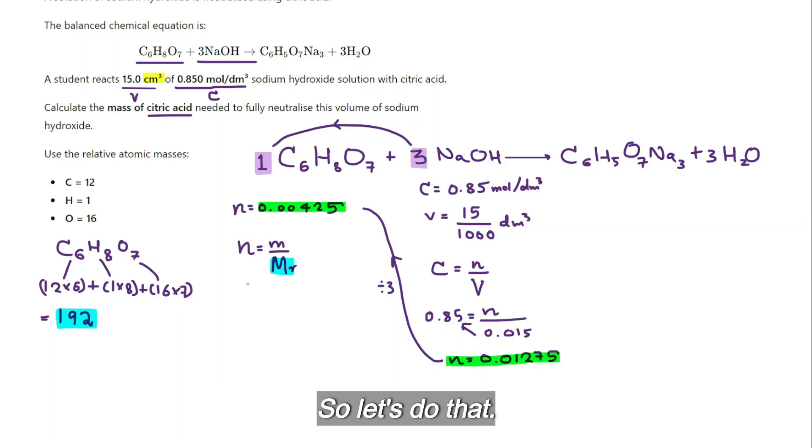So let's do that. Number of moles is 0.00425 equals mass divided by 192. Cross multiplication gives me the final answer: 0.816 grams.